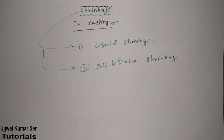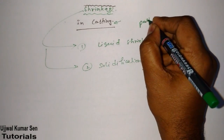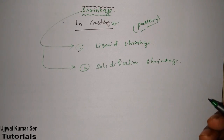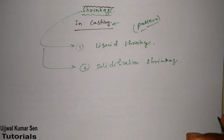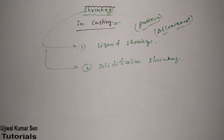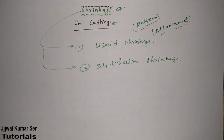This is all about shrinkage. I am creating this video to help you solve numerical problems asked in GATE. If you are preparing for a university examination, shrinkage is one type of allowance we study when we study about patterns — including gate, riser, runner, and sprue. Shrinkage is one allowance in patterns, and from this topic we get several questions in GATE.